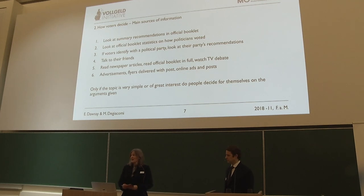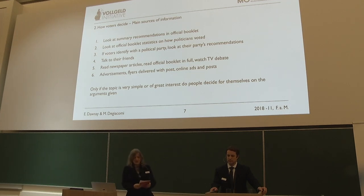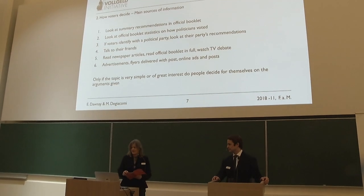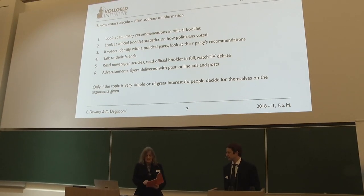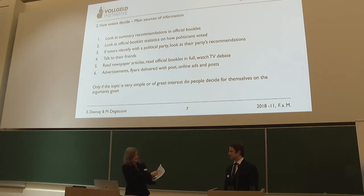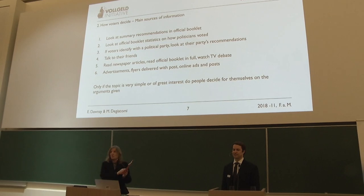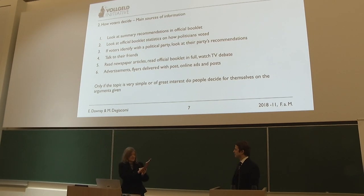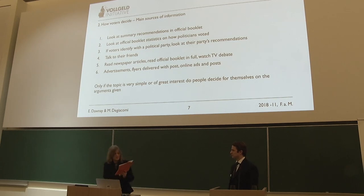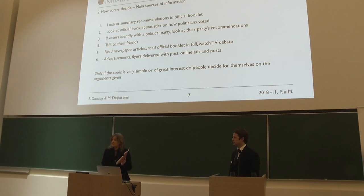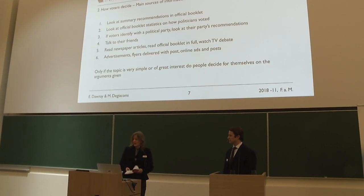You can imagine people opening their envelope one day, finding this booklet, and thinking: let's sit down and do my voting. What's this about? Oh, Vollgeld. What's that? That sounds new and strange. Let's read a sentence or two. This is really heavy going about the monetary system. So they read a bit, then might think, let's go straight to see what the recommendations are. They see that the Federal Council is against it, that in the National Council 169 politicians were against and nine were for, and in the Council of States 42 politicians were against and none for.